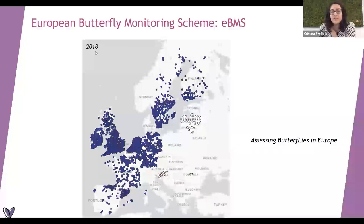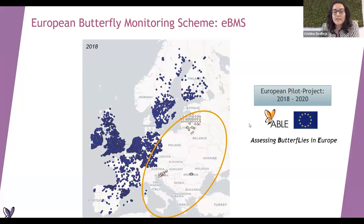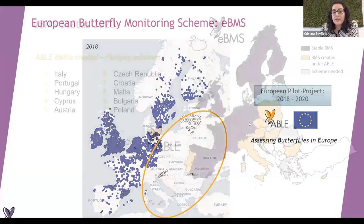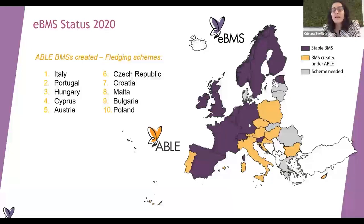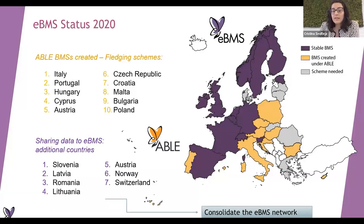To show you that many countries were joining - this is 2018 - but we had a big gap in eastern and southern countries where we had almost no transects. So in 2018, we got a European pilot project called ABLE. With that, we were able to start promoting butterfly monitoring schemes in those lacking countries. In two years, we created BMS in the countries shown in orange, and created a really nice, strengthened network. Some other countries that were recording started to share data with us, and we consolidated the network.